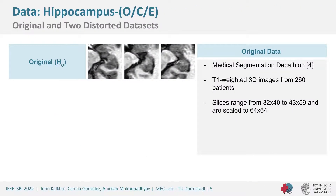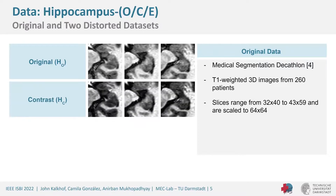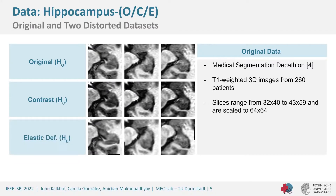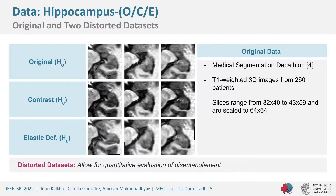The data we use is the hippocampus dataset from the Medical Segmentation Decathlon: T1-weighted MRI images from 260 patients, used as 2D slices ranging from 32×40 to 43×59, all scaled to 64×64. On the left you can see example images from this dataset. From it we create two distorted datasets — one distorted by contrast and one by elastic deformation — which allows us to quantitatively evaluate disentanglement by knowing the exact domain differences.